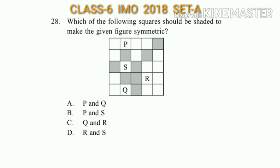Question number 28: Which of the following squares should be shaded to make the given figure symmetric? Looking at the figure, to make it symmetric we need to shade squares R and S, so the answer will be option D.